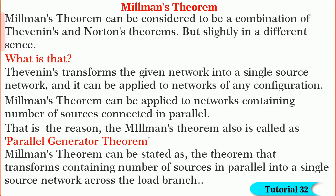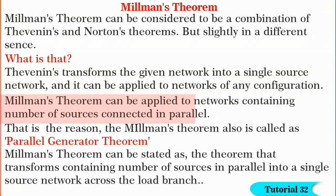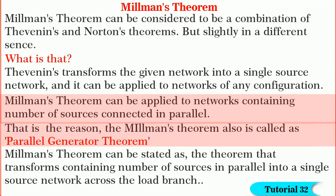Millman's theorem can be considered a combination of Thevenin's and Norton's theorems, but slightly in a different sense. Thevenin's theorem transforms a given network into a single source network of V-Thevenin in series with R-Thevenin, and can be applied to networks of any connectivity. But Millman's theorem can be applied only to networks of parallel connected sources, so this theorem is also called the parallel generator theorem.